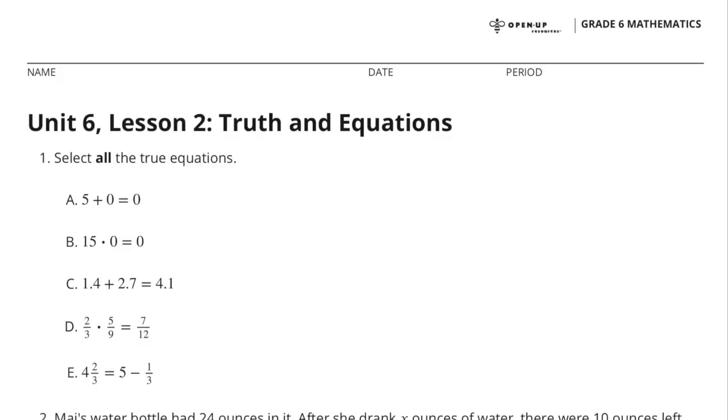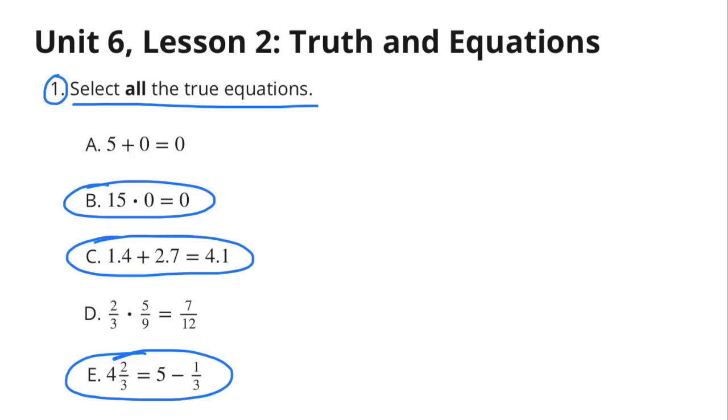Unit 6, Lesson 2, Truth and Equations Number 1. Select all the true equations. I selected B, 15 times 0 equals 0, C, 1 and 4 tenths plus 2 and 7 tenths equals 4 and 1 tenth, and E, 4 and 2 thirds equals 5 minus 1 third.